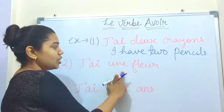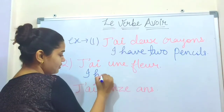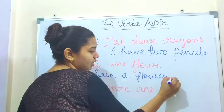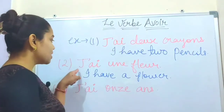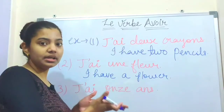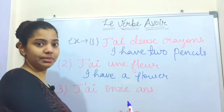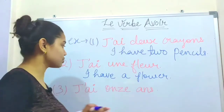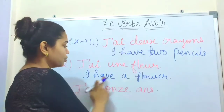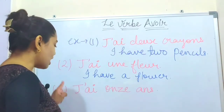The second example is: j'ai une fleur. J'ai means 'I have,' une means 'a,' and fleur means 'flower.' So j'ai une fleur means 'I have a flower.' Once you learn the conjugation well, it is not difficult to use avoir in any sentence.